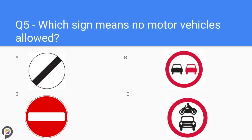Question five: which sign means no motor vehicles allowed? Option A is the national speed limit sign, B is the no entry sign, C is the no overtaking sign, and D is the no motor vehicle sign.